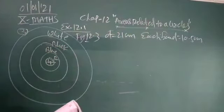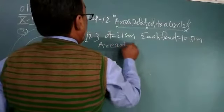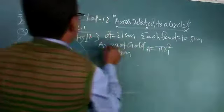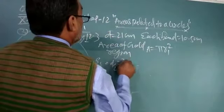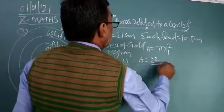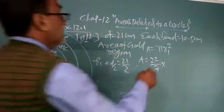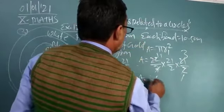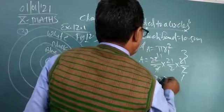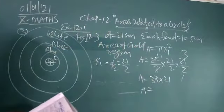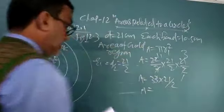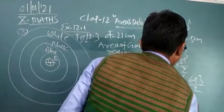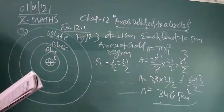Area of gold region: A is equal to pi r1 square. D equal to r1 means d by 2, 21 upon 2. So A is equal to pi means 22 upon 7, r1 means radius, it is given 21 upon 2. So A is equal to 33 multiply by 11, 693 upon 2 means 346.5 square centimeter. This is the area of gold region.